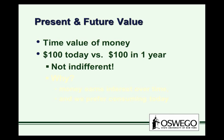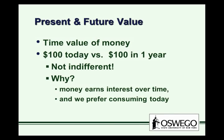No one here would choose to wait a year for $100 if they could have the exact same amount of money today. Why? Well, money earns interest over time, but also we prefer consuming today. We're relatively impatient. We value consumption today more than we would value the same amount of consumption in the future. And that's what gives us a time value of money.